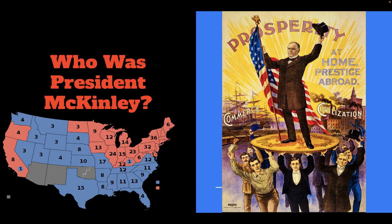So who was President McKinley? Before he was president, he was the governor of Ohio for four years — two terms, as back then governor terms were two years. He served as chairman of the House Ways and Means Committee and was known as an ardent protectionist. He was also the last president to be a veteran of the Civil War, serving as a brevet major in the Ohio Cavalry Division.